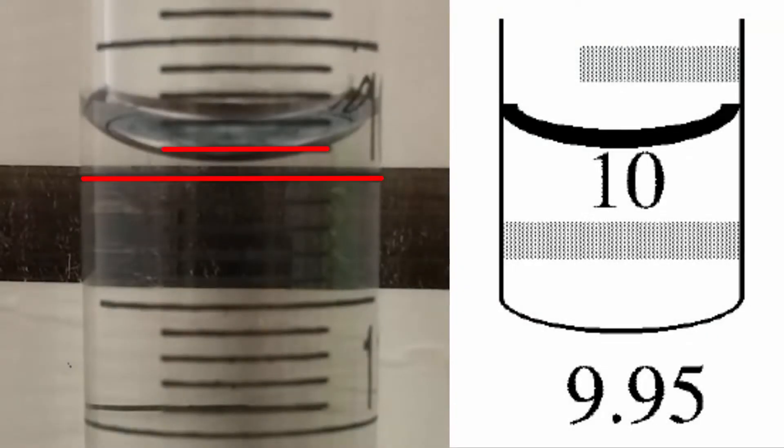In the last example, the meniscus sits halfway between the top of each line which gives a reading of 9.95. Note that it is not halfway between the two lines. Halfway between the two lines would be halfway between 9.92 and 10.00 which would give a reading of 9.96.